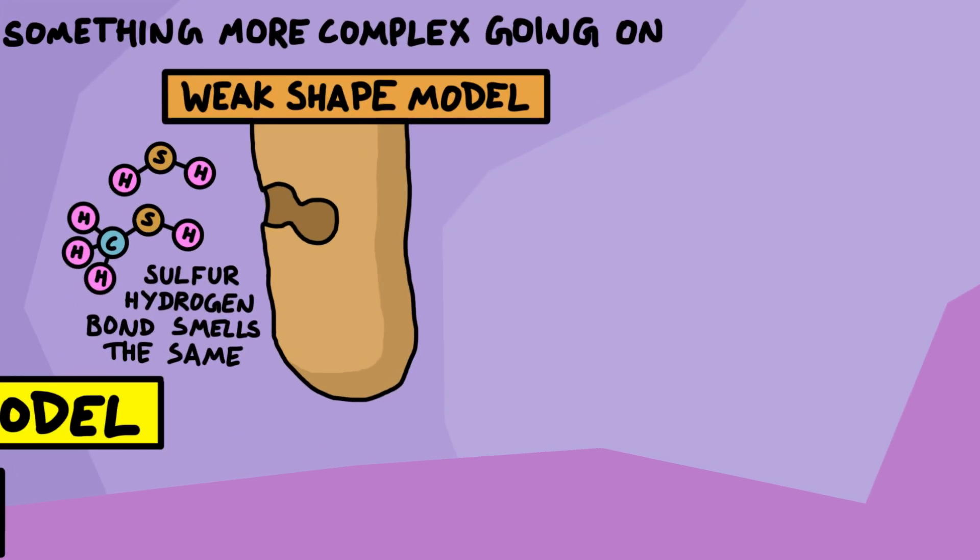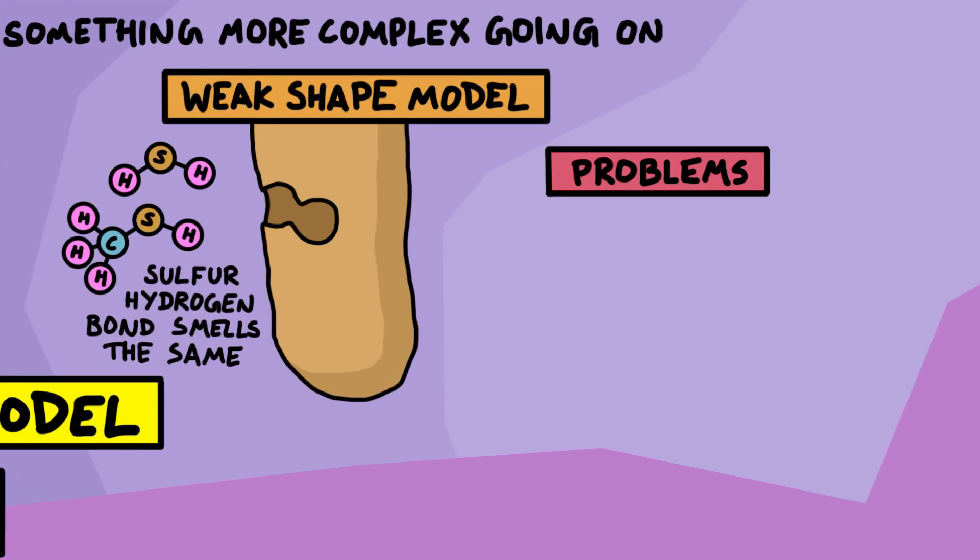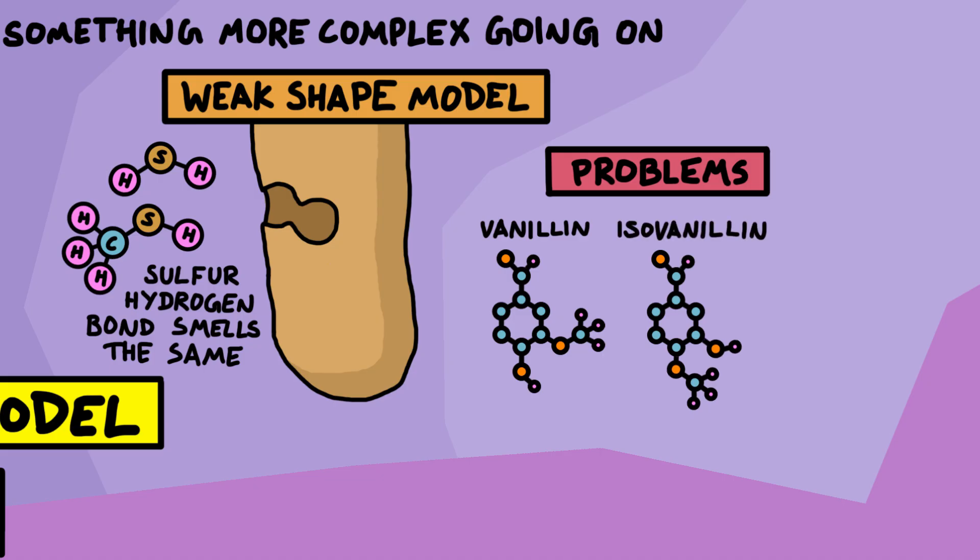However, this theory can't explain everything. There's certain molecules that are made of the exact same groups, but are just arranged in a different way, but they smell very different to each other. For example, vanillin, which smells like vanilla, has all the same molecular groups, just in a different order to isovanillin, which has a very nasty sickly medicinal smell.